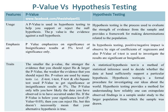P-value emphasizes significance or insignificance of results at the 5% level of significance only. Whereas in hypothesis testing, the positive or negative impact is observed by the sign of coefficients of regressors, and also the p-value of the t-test is used to investigate the results as significant or insignificant.